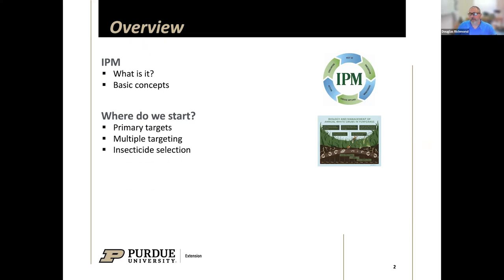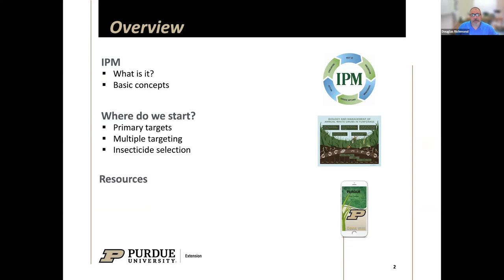That has a lot to do with insecticide selection. The chemistry, the environmental properties, and the residual activity of some of the insecticides we have available really make some products a better fit for certain solutions than others. It's important that you have an understanding of these products and their qualities so that you can make really good decisions in terms of the tools you're using and how they fit inside this multiple targeting framework. I'm going to wrap up by talking about some resources that I think might be useful to you and how to access those resources.